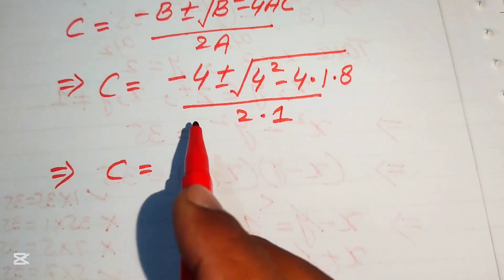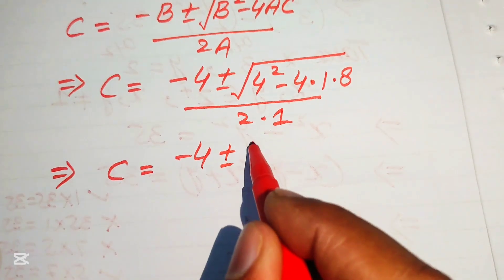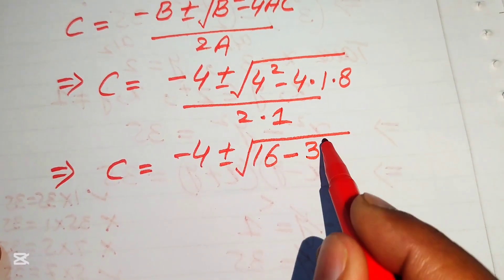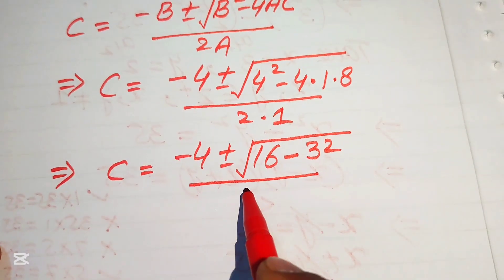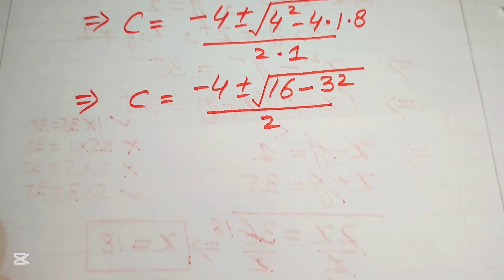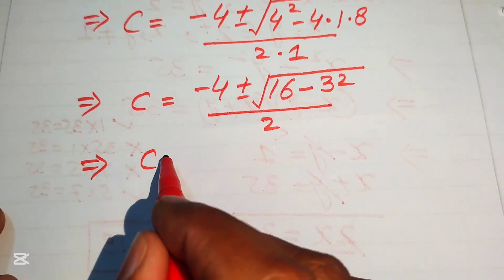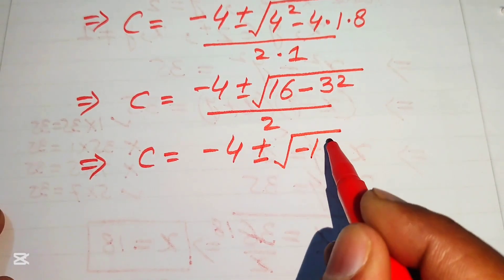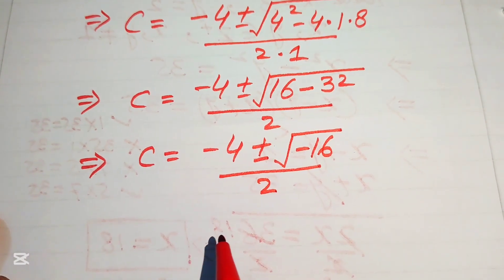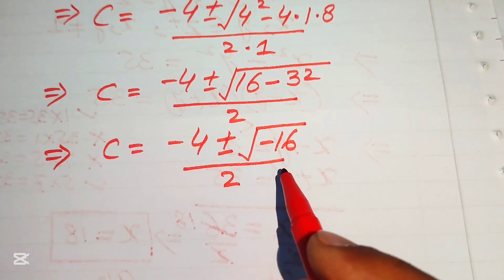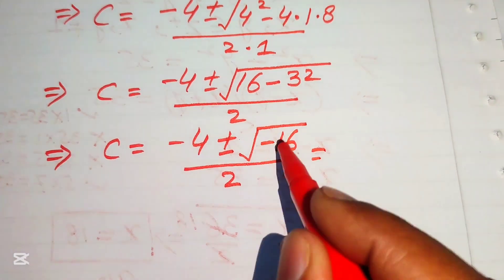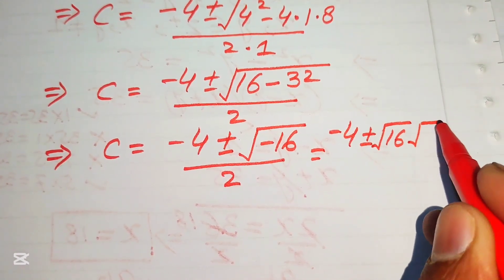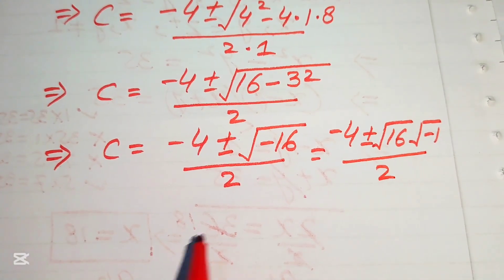Simplifying: C = (-4 ± √(16 - 32)) / 2 = (-4 ± √(-16)) / 2. We break the radical as √(-16) = √16 · √(-1) = 4i, writing C = (-4 ± 4i) / 2.